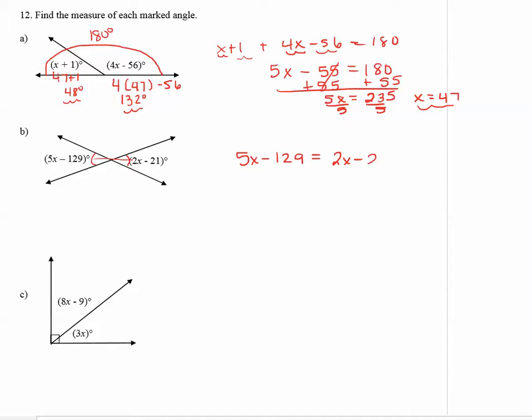Since there aren't any like terms on the left or the right, you can get your letters together. And I like to get my letters on the left. Positive 2x becomes minus 2x and we're going to line that up under the 5x. 5x minus 2x is 3x. And then when I bring down the rest of the equation, I have 3x minus 129 equals negative 21.